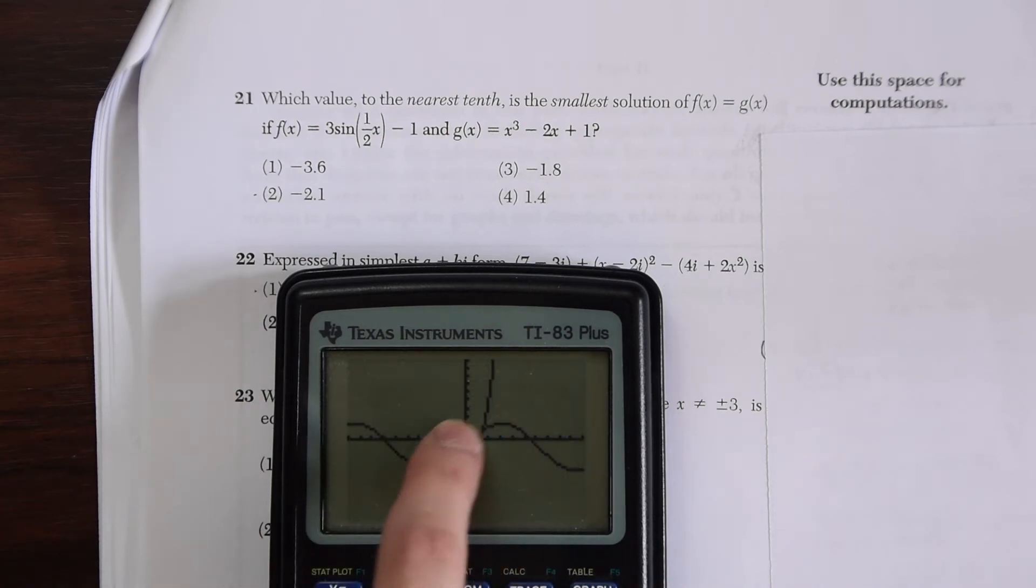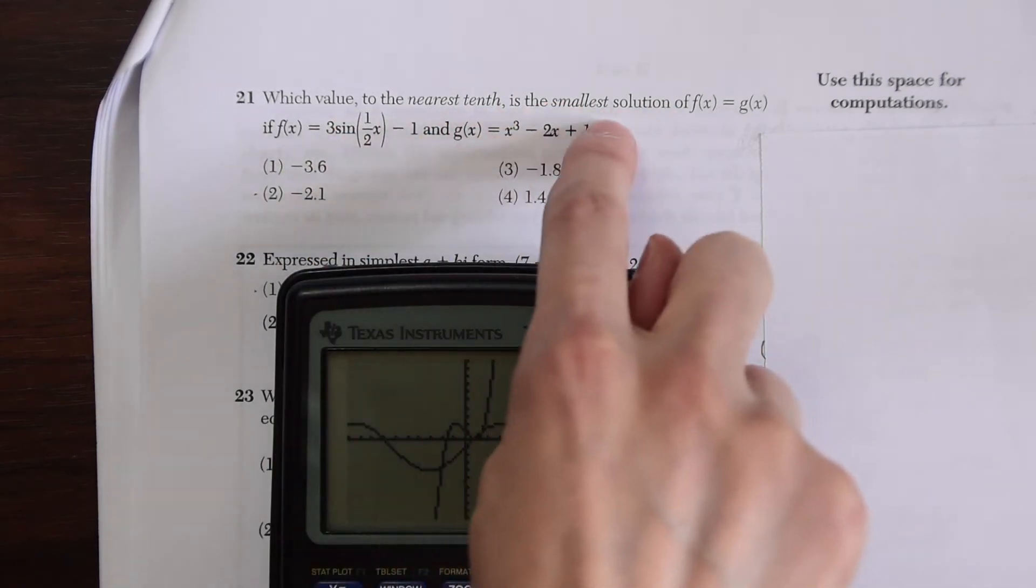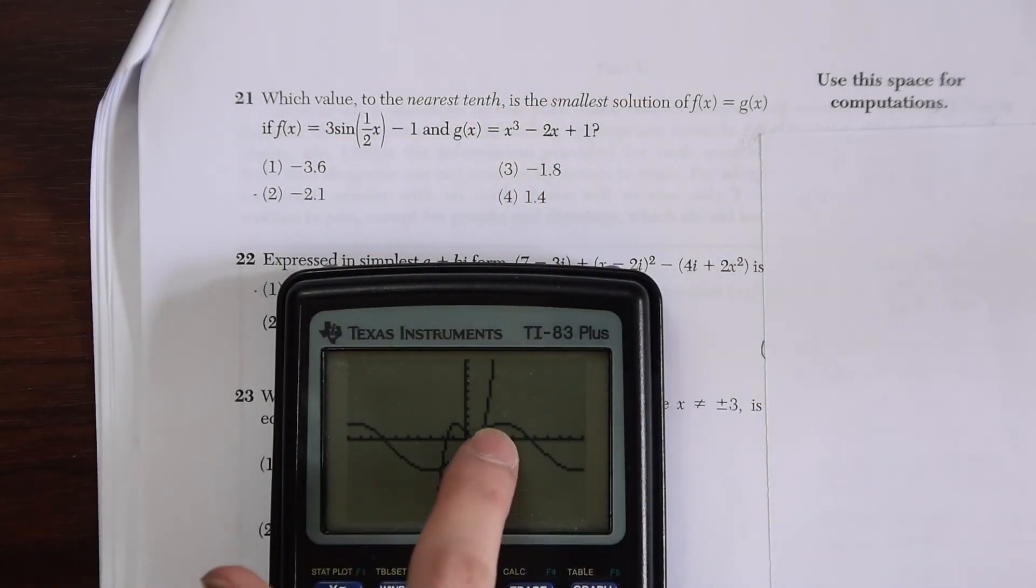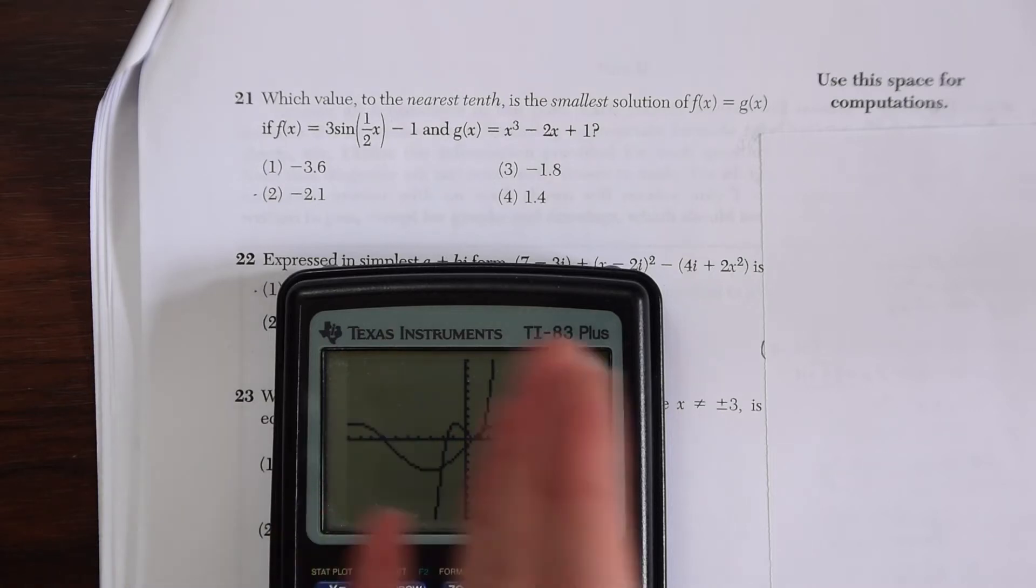We have a couple of different answers here. What is the smallest solution to the nearest tenth? That's what we want to know. If you look at the smallest solution, we're going to want to look over here because you can see that the two intersect each other at three points. One, two, three. But if you want the smallest solution, we want the smallest x value which is right here on the negative x value side.